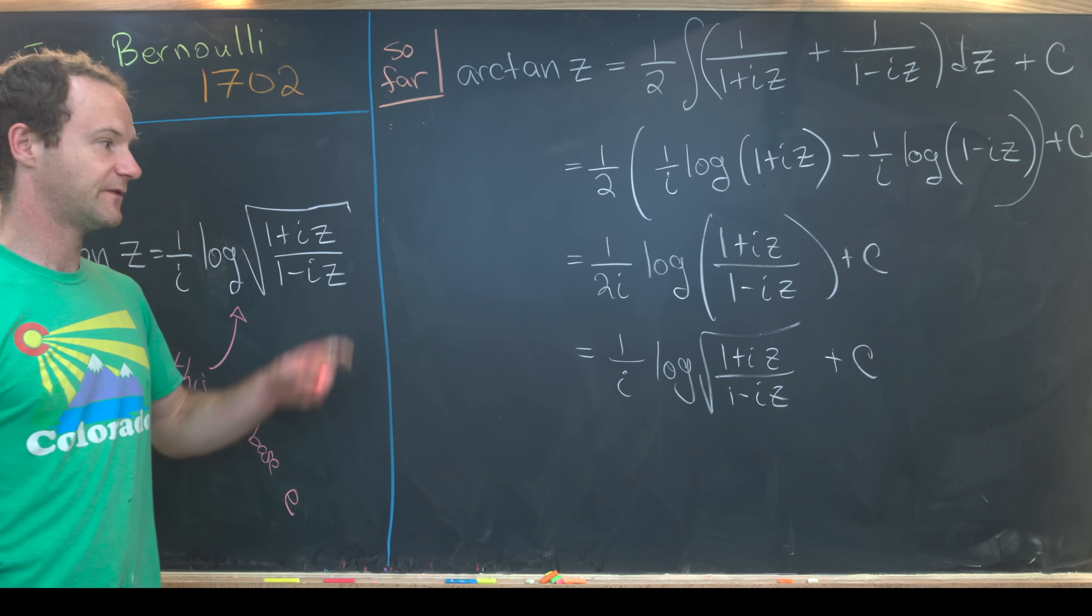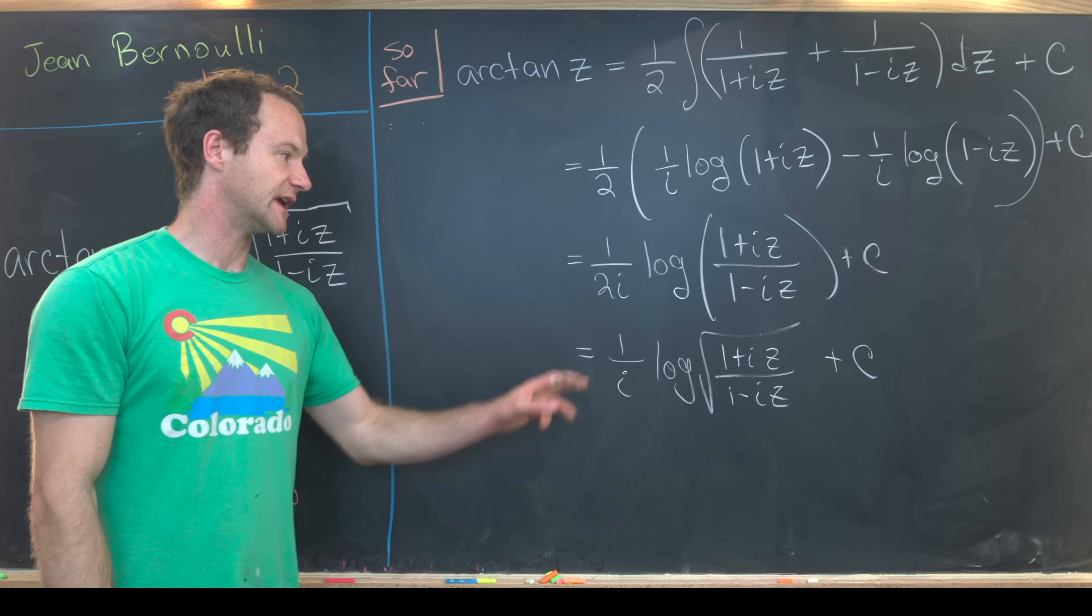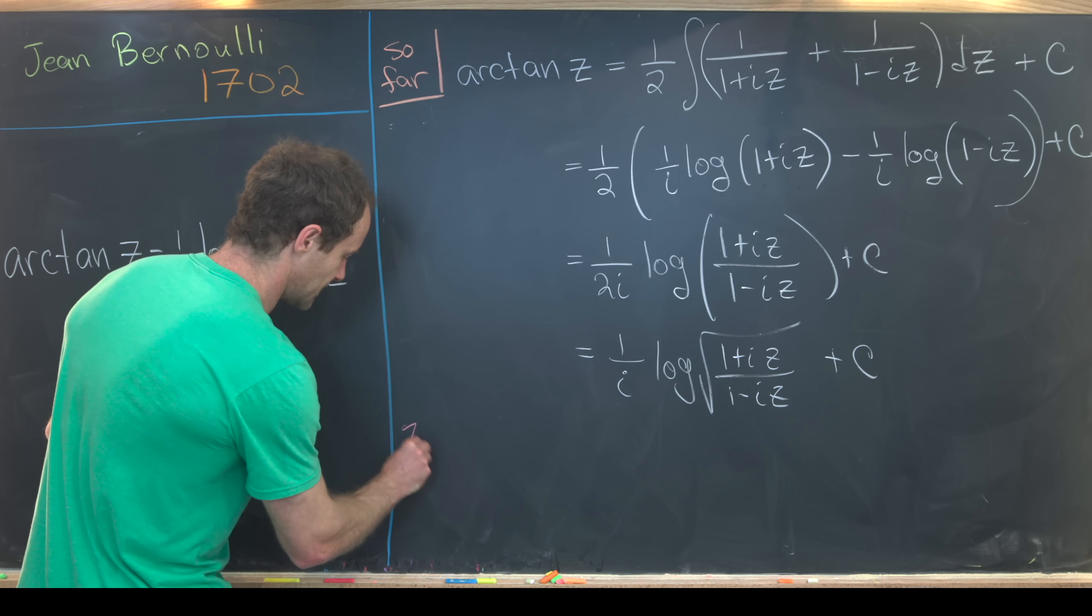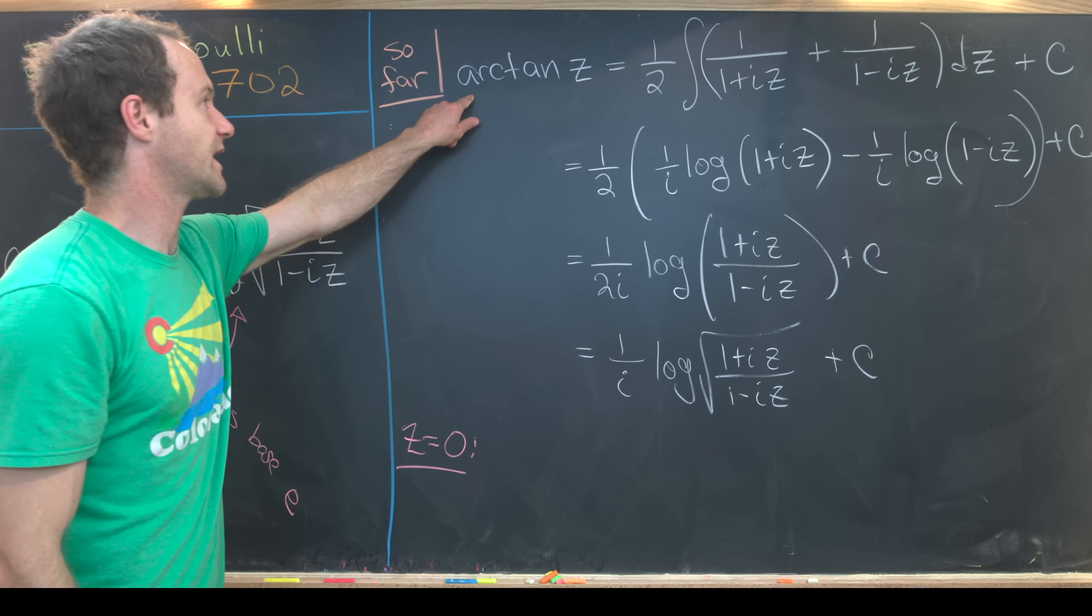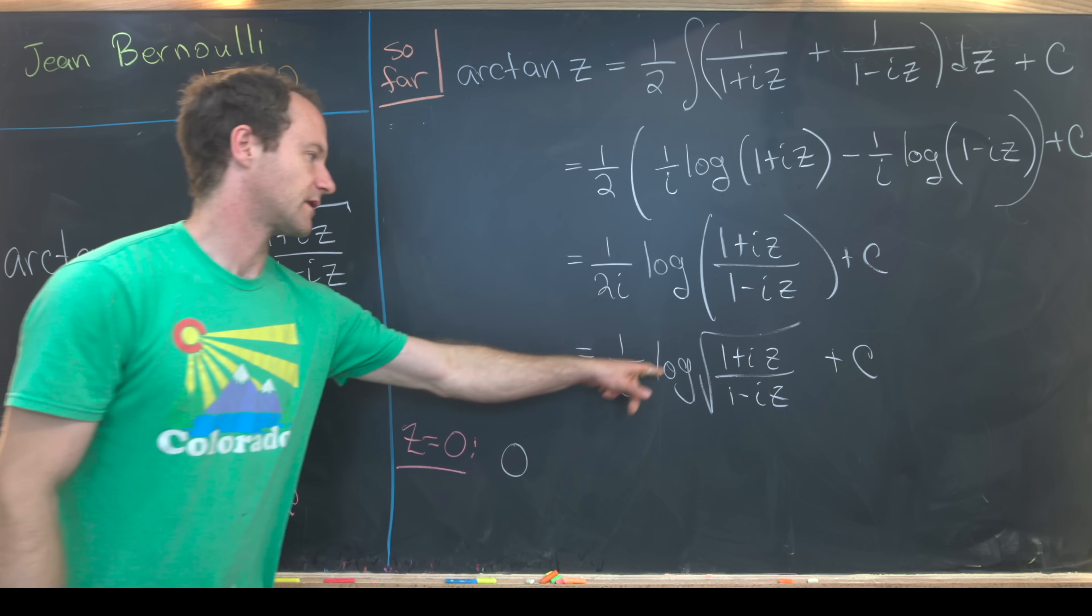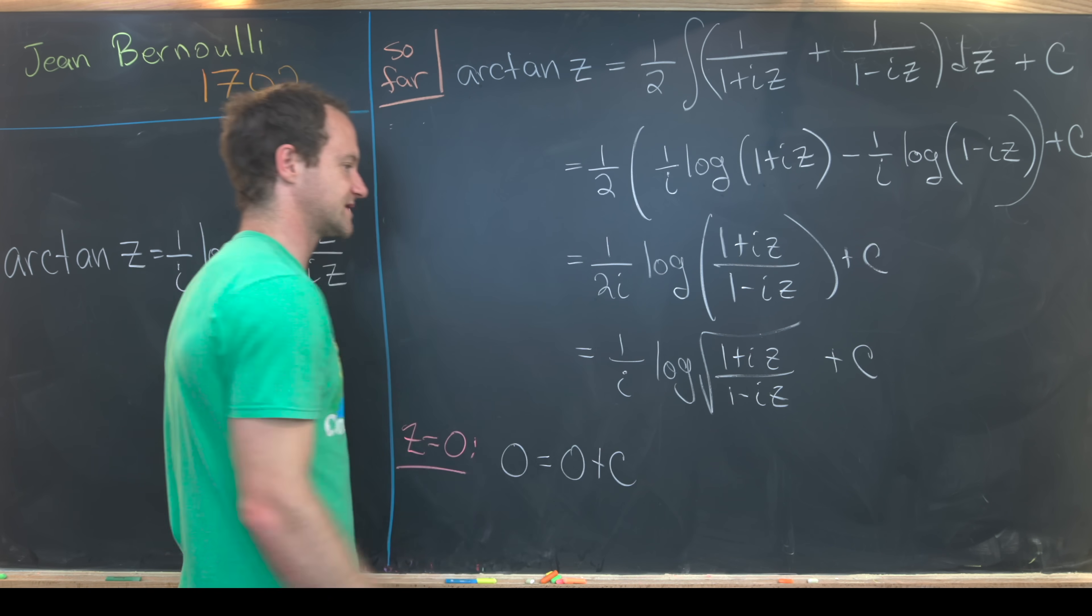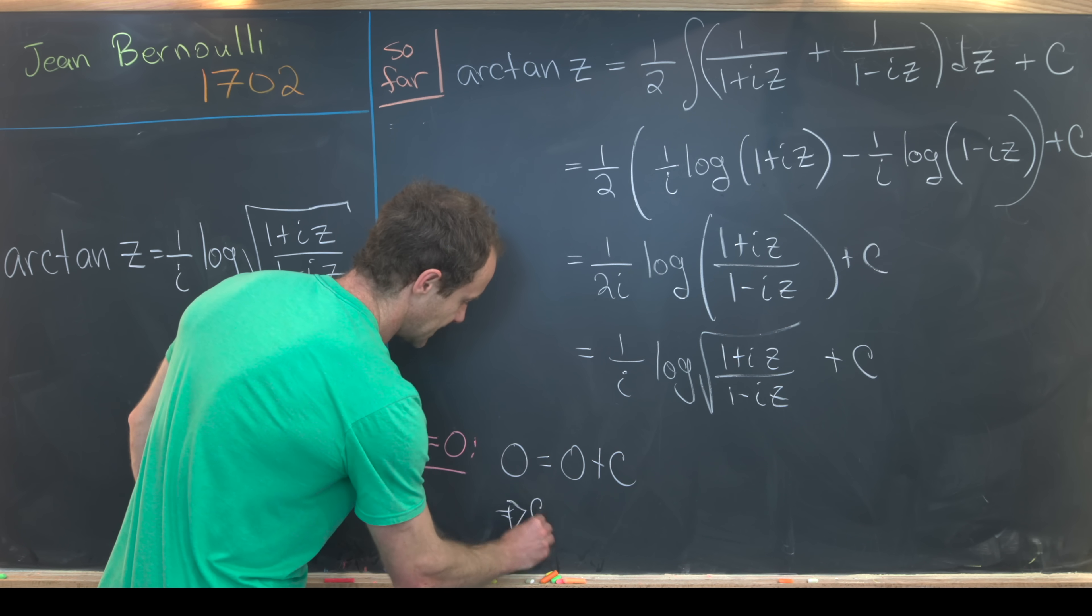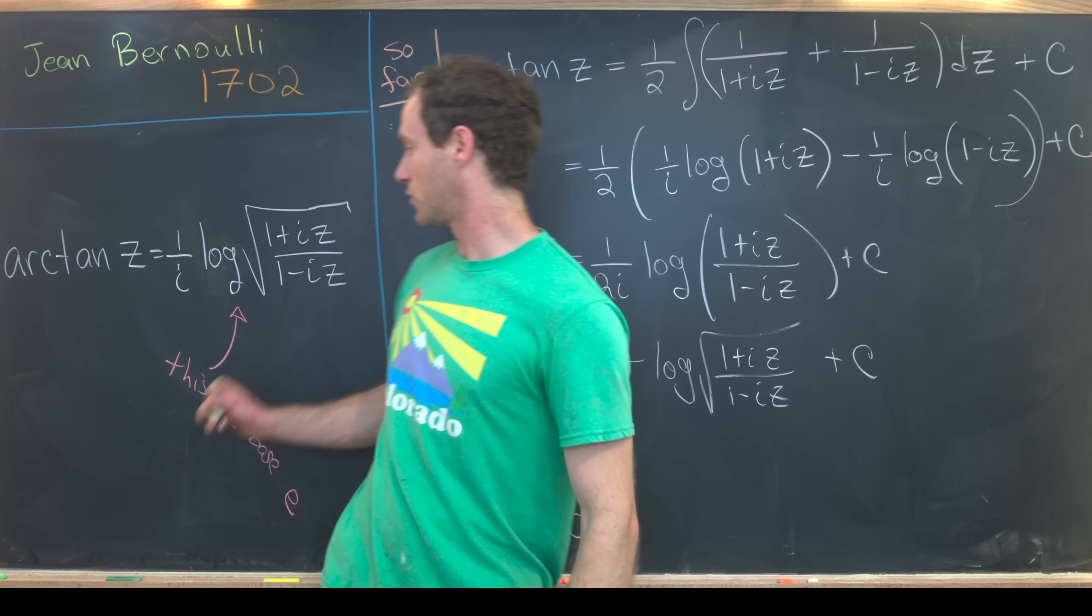Now we have to figure out what that constant is. We can do that just by plugging in any value for z and simplifying both sides of this equation. Let's notice that if we set z equal to zero, we get arctan of zero, which is zero. We get the logarithm of one, which is zero, and then we get plus this constant. So that tells us that this constant is equal to zero. That means we've proved this identity.